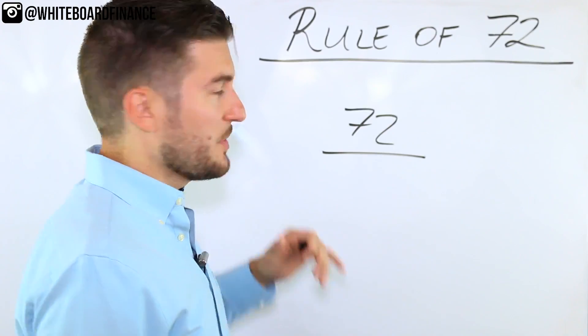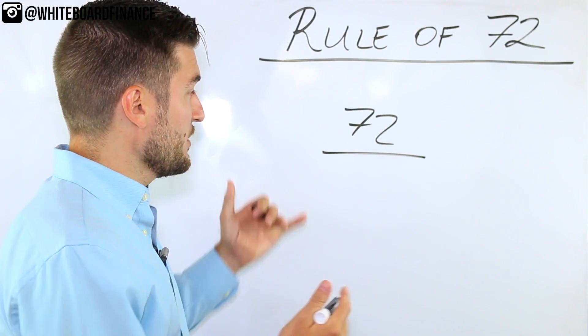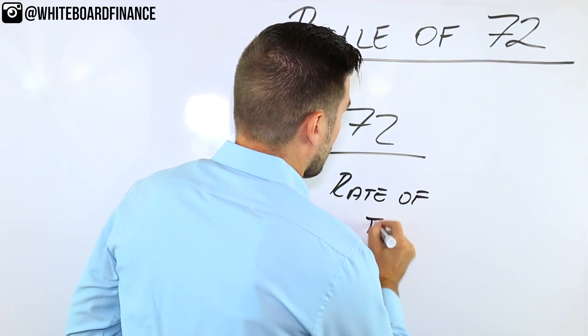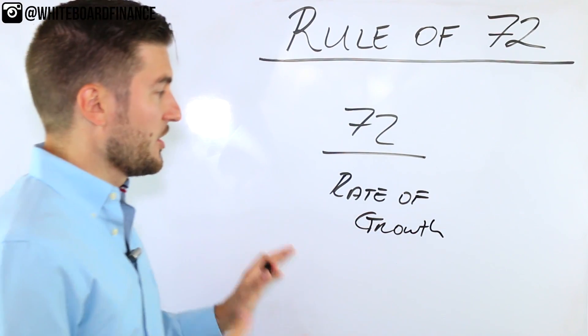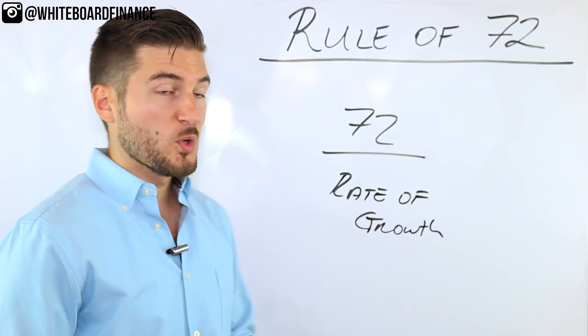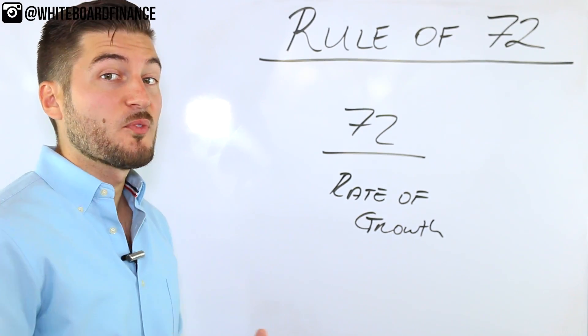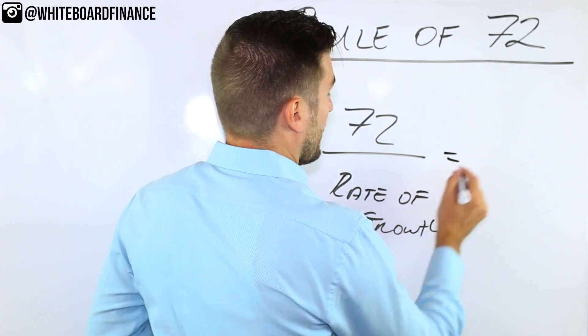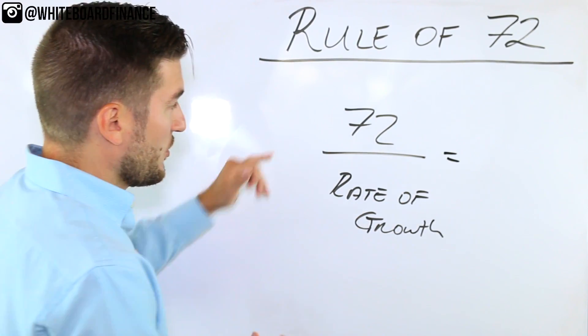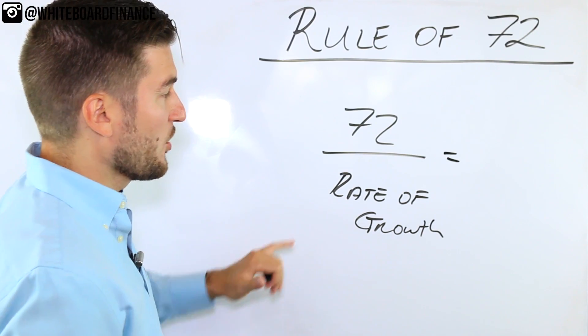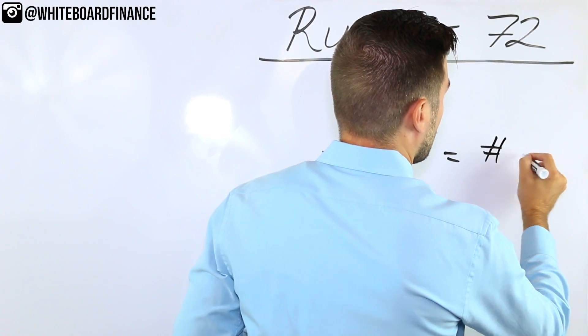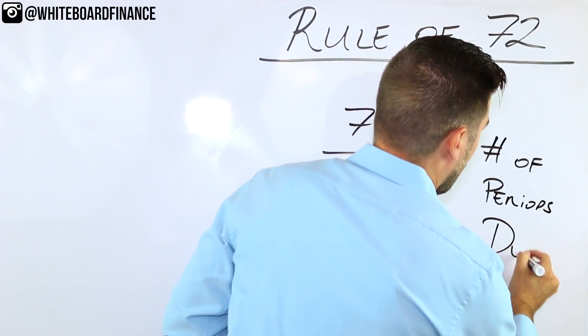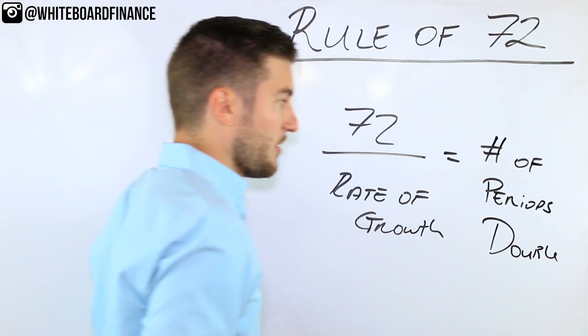So the rule of 72 is a very simple rule. It actually applies to more things than just investing. And I'll show you that later in this video. It's essentially taking the number of 72, dividing it by the rate of growth. When you take 72 in the numerator divided by a rate of growth in the denominator, you're getting the number of periods that investment takes to double.